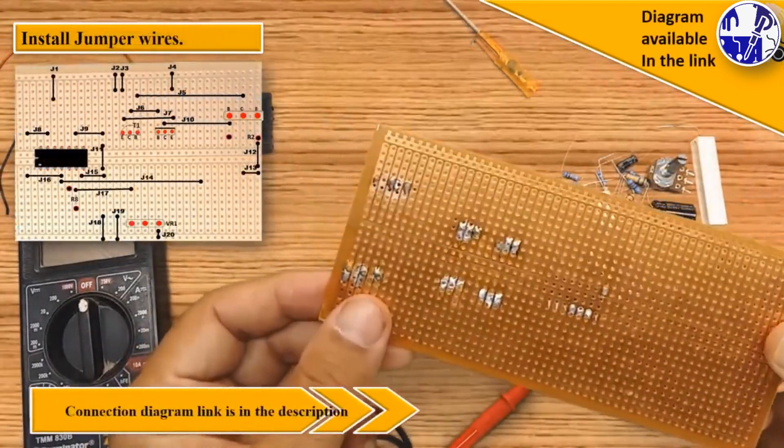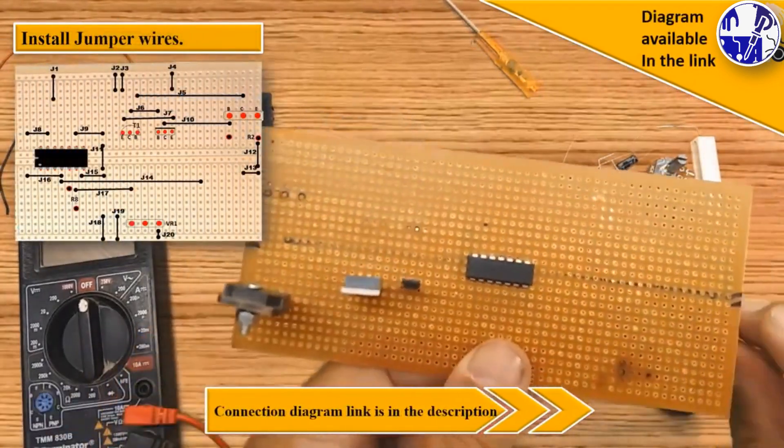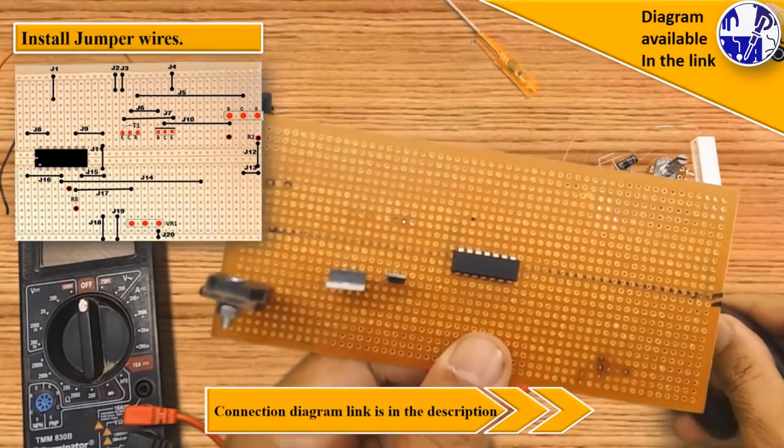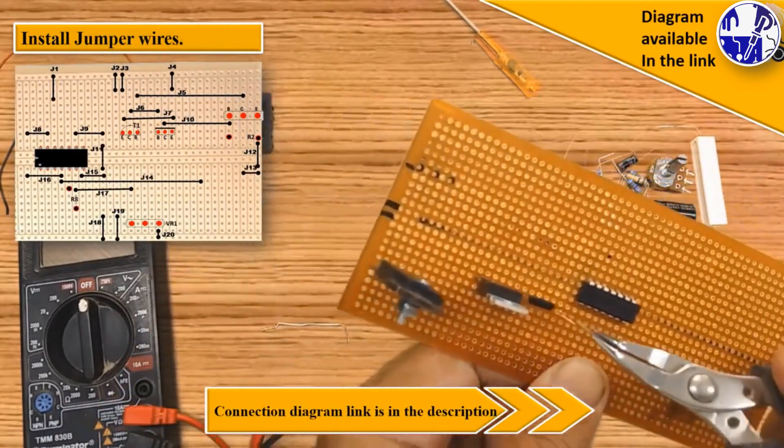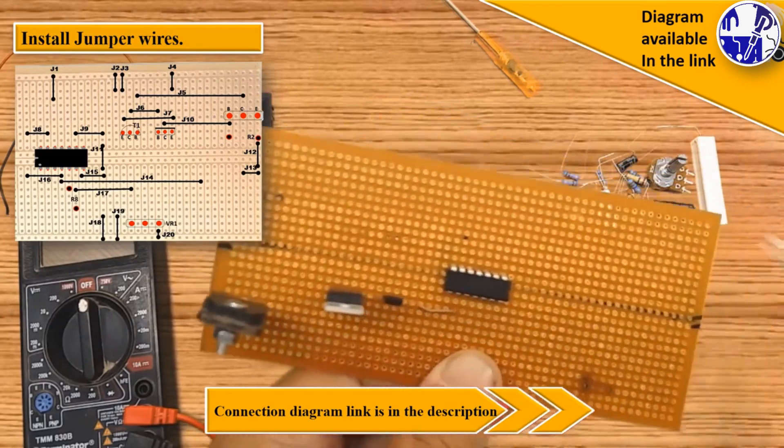Next, establish connections with jumper wires on the Vero board according to the provided diagrams. Links for all diagrams are given in the description.